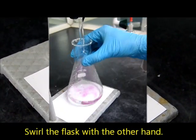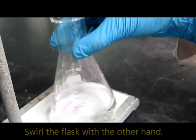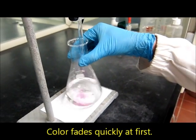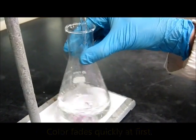It gets a bit pink for a moment. And continue to swirl the flask with the other hand doing non-stop. Then you see the colour fades quickly at first.